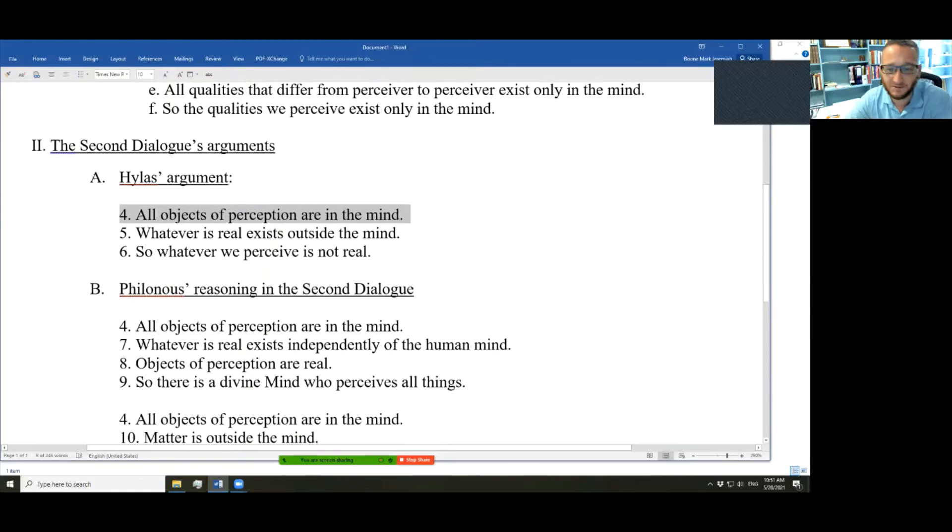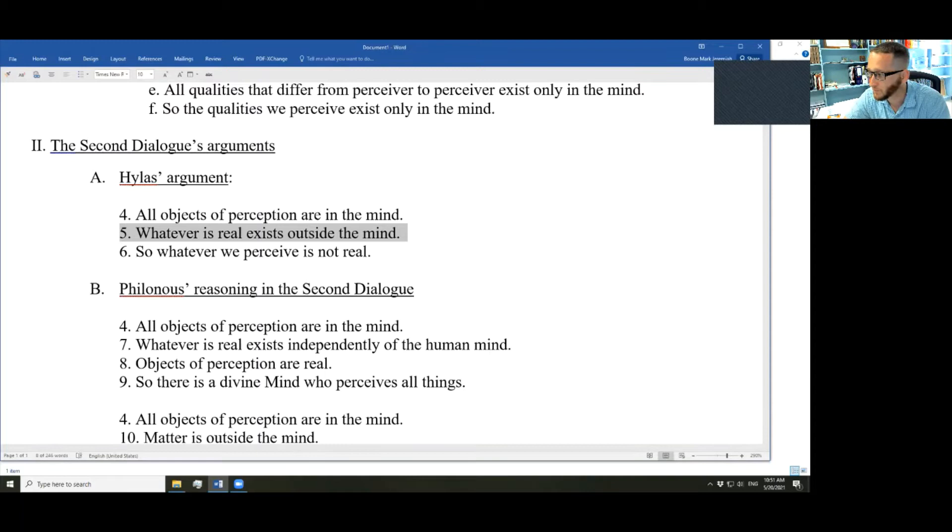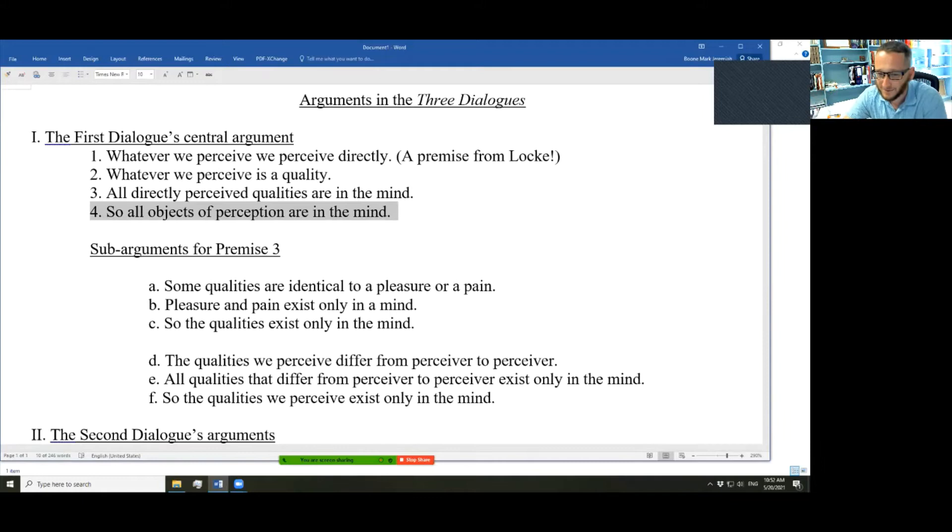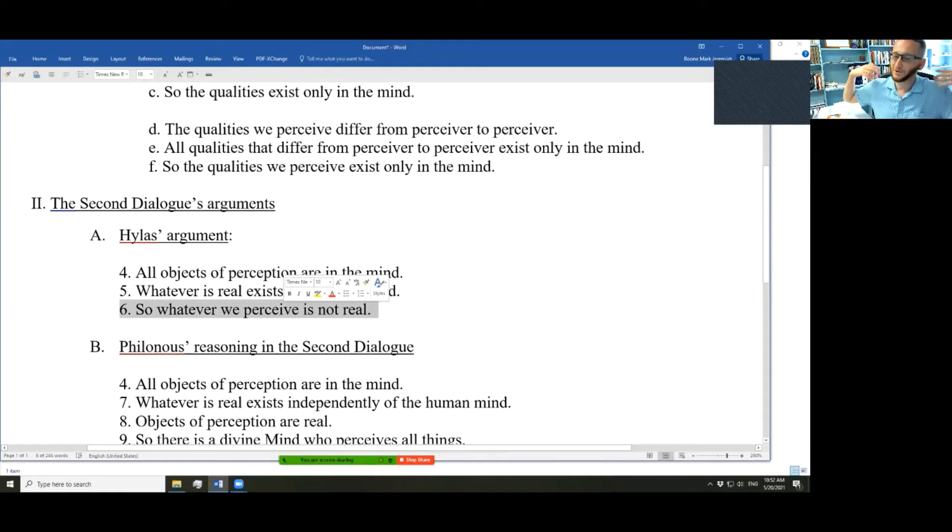But whatever is real exists outside the mind, so whatever we perceive is not real. So Hylas is very upset about his view that what exists, what is real exists outside the mind, which leads him to despair, skepticism, whatever we perceive is not really real. At this point, he's already actually given up his view that matter exists. Hylas has learned from Philonous in the first dialogue that any matter we perceive must be only in the mind. Therefore, he concludes, rather upset about it, too. Whatever we perceive is not real.